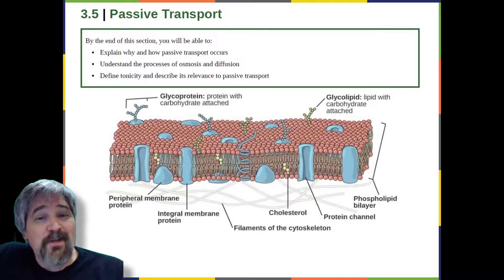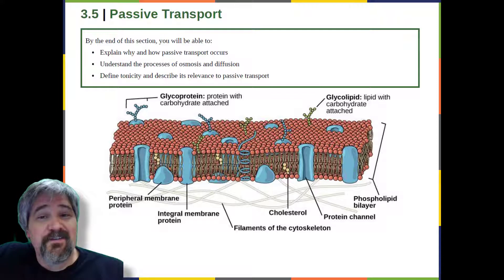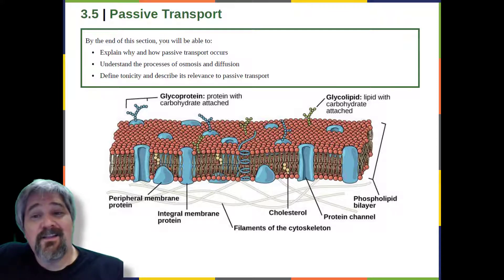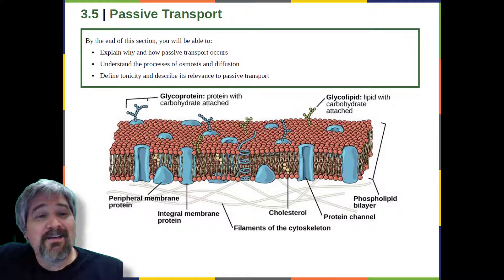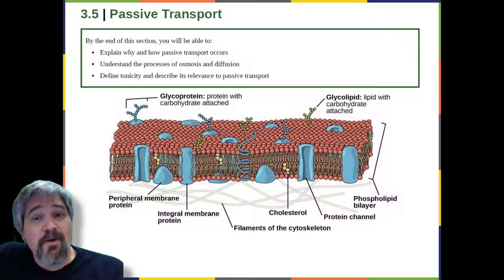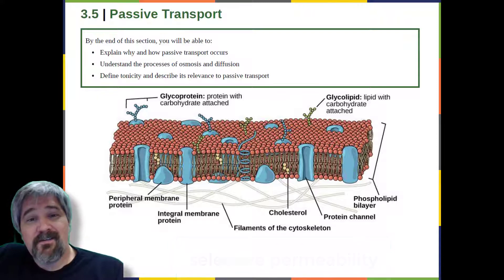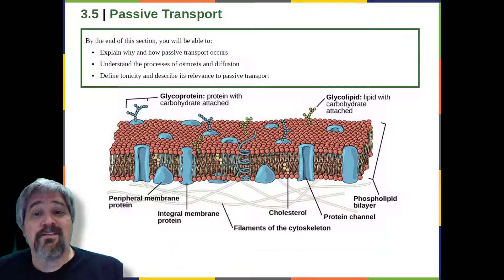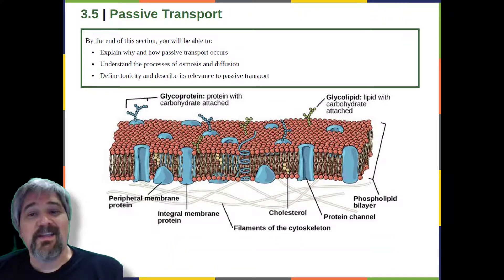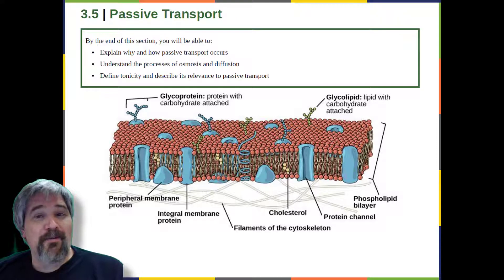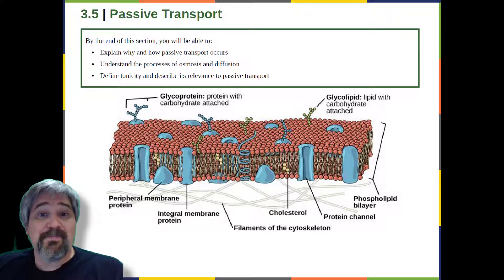Plasma membranes must allow certain substances to enter and leave a cell while preventing harmful materials from entering and essential materials from leaving. In other words, plasma membranes are selectively permeable. They allow some substances through but not others. If they were to lose this selectivity, the cell would no longer be able to sustain itself and it would be destroyed.